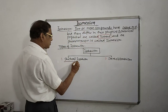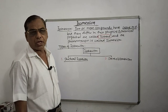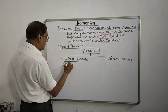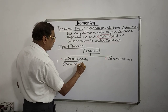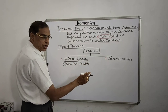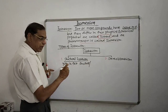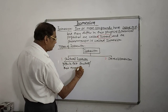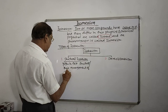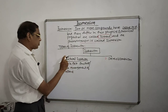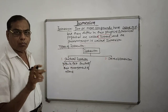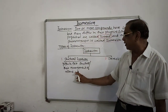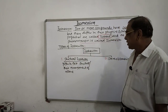What do we mean by structural isomerism? Two or more compounds have the same molecular formula but differ in their structural formula — that is, they differ in their arrangement of atoms in the molecule. This is called structural isomerism.